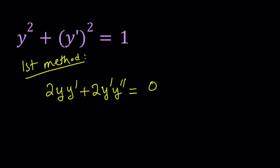Two motivations behind this: first, I want to get rid of the squares and make it nicer. Second, we have a constant on the right-hand side, and by differentiating we get 0 — that gives us a homogeneous equation. This result is factorable: we factor out 2y prime, and we get 2y prime times the quantity y double prime plus y equals 0.